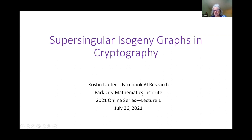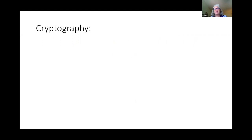Let me start right away because I definitely have more than 50 minutes of content, so I might need to be cut off at some point if I'm going too long, but I will try to compress it. In order to talk about supersingular isogeny graphs in cryptography, there are a lot of words to specify and get into more detail. I'm going to start at the end — starting with cryptography and then explaining about the graphs and, in particular, supersingular isogeny graphs. Just so that everyone is on the same page, this is the motivation for the topic.